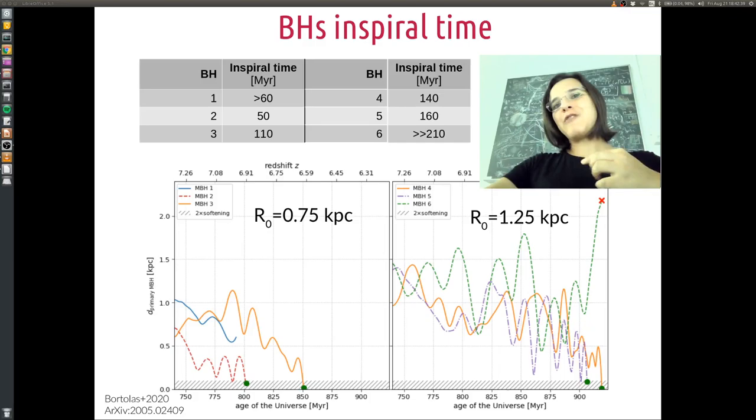The most surprising one is black hole number six, which basically got ejected from the system, while the other black holes, starting from the same initial configuration, basically took roughly a hundred million years to reach the center. So not long.